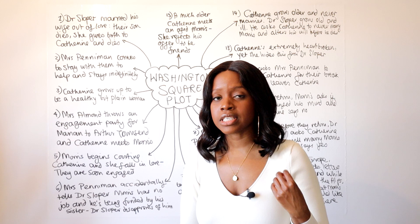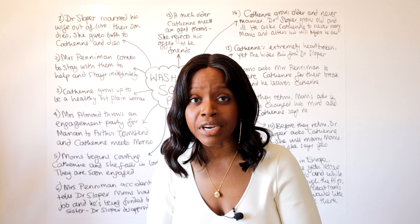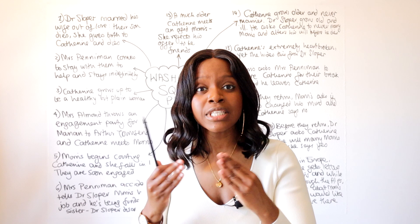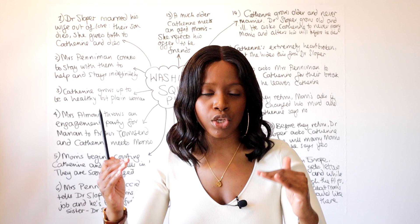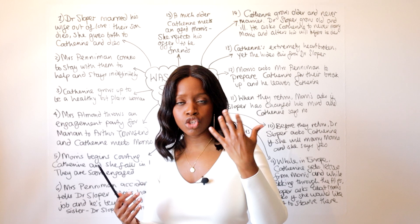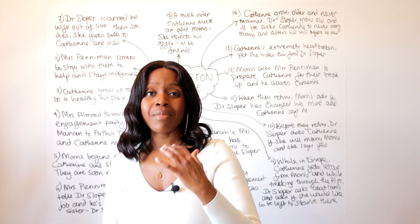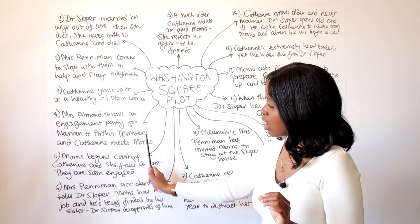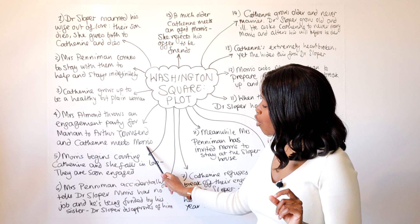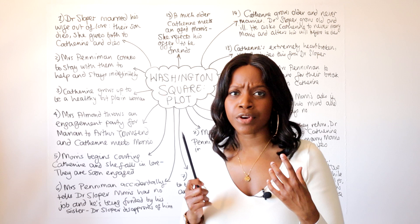Mrs. Almond throws an engagement party for her own daughter Marion to a man named Arthur Townsend. It's worth noting that during this time in 1800s American society, marriages — especially in New York's elite circles — were related not just to love but to social status. Marrying somebody equally or more wealthy was more important than marrying out of love. It's at this party that Katherine meets Morris Townsend, who is related to Arthur Townsend.